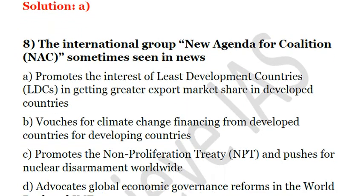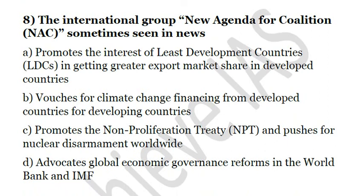The next question: The international group 'New Agenda for Coalition,' sometimes seen in news — A. Promotes the interests of least developed countries in getting greater export market share. B. Vouches for climate change financing. C. Promotes the Non-Proliferation Treaty and pushes for nuclear disarmament worldwide. D. Advocates global economic governance reforms in the World Bank and IMF. This New Agenda for Coalition promotes the Non-Proliferation Treaty and disarmament. Important members include New Zealand, Brazil, Ireland, and Egypt. So the solution is C.